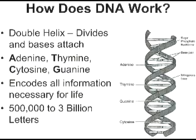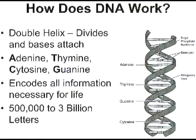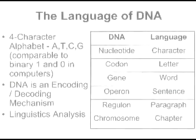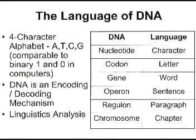Now let's talk about DNA. The double helix divides and bases attach — it splits and kind of unzips, and then complementary chemicals form a complementary DNA strand. Four bases: adenine, thymine, cytosine, and guanine. It encodes all the information necessary for life. Real strands of DNA have anywhere from 500,000 letters in the very smallest organisms to 3 billion letters. If you look at the language of DNA, you have a four-character alphabet. In Ethernet and TCP/IP we have a two-letter alphabet — ones and zeros — but in DNA it's a four-letter alphabet. DNA is an encoding and decoding mechanism, as I'll explain later.